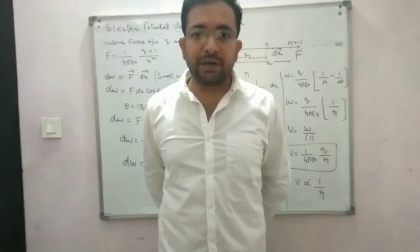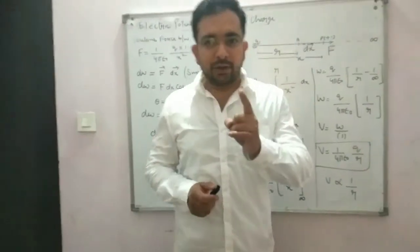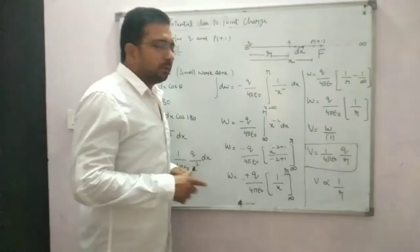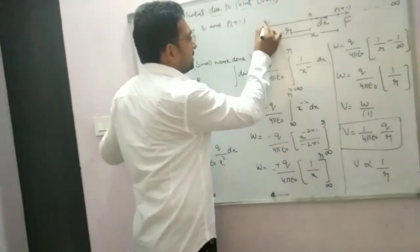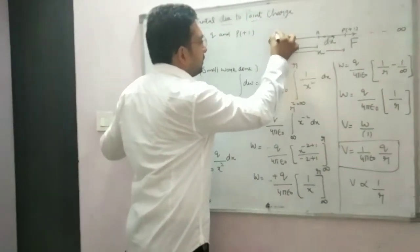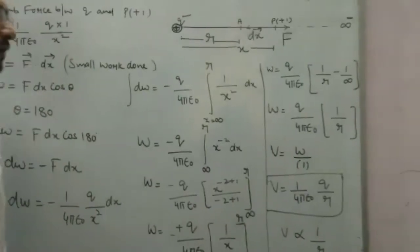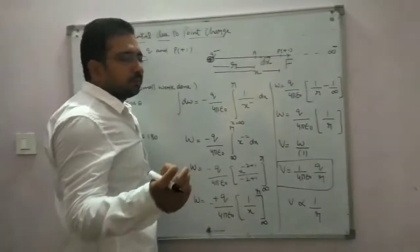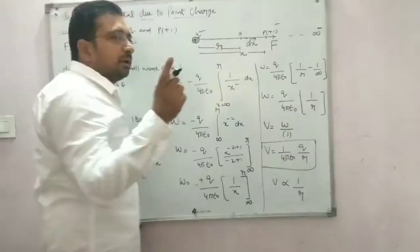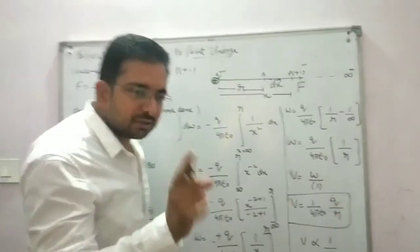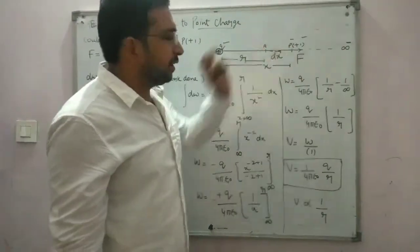Electric potential due to point charge — this chapter is an important topic. Electric potential due to point charge: point means one single charge. This is a positive charge. This is infinity. We bring a unit positive test charge from infinity to point P.